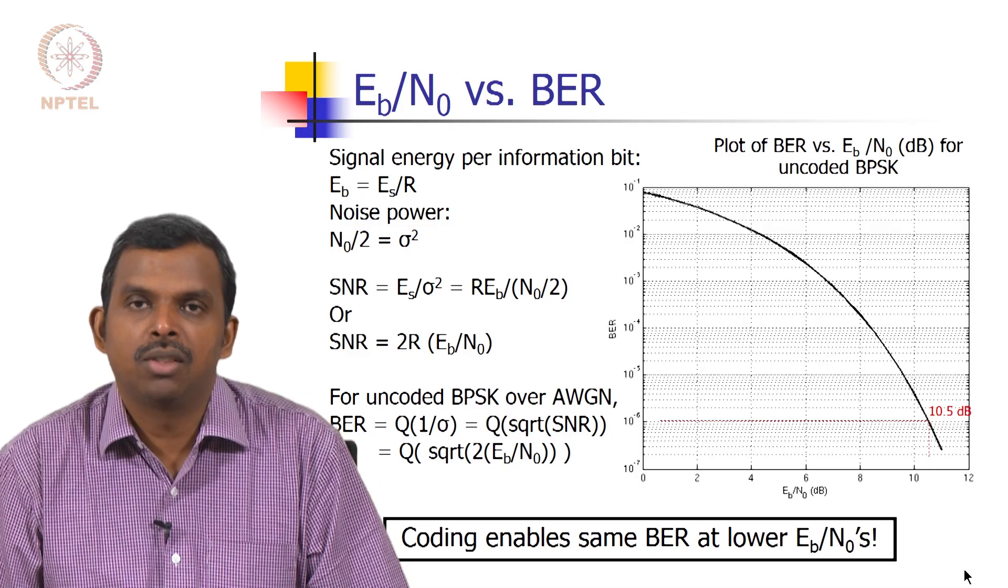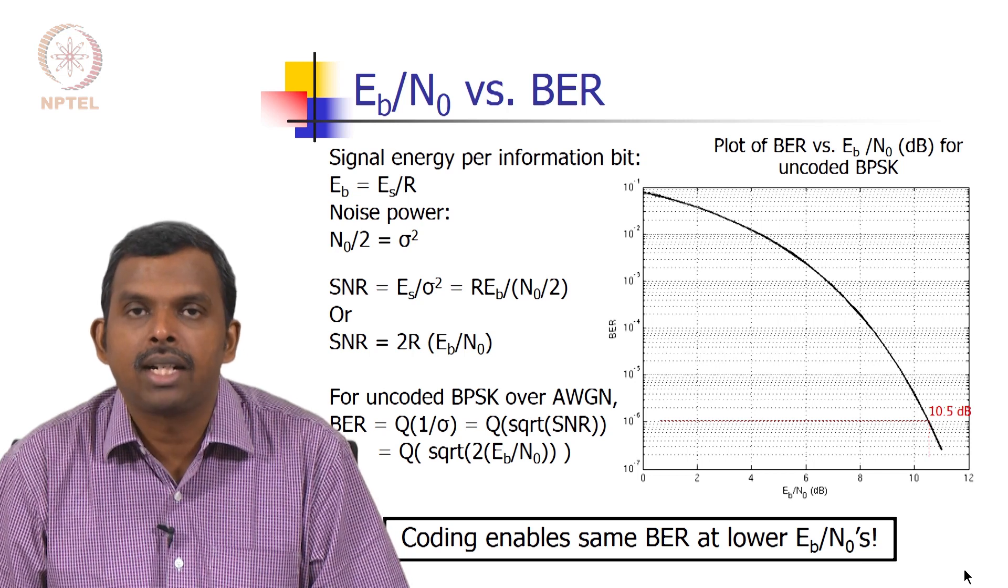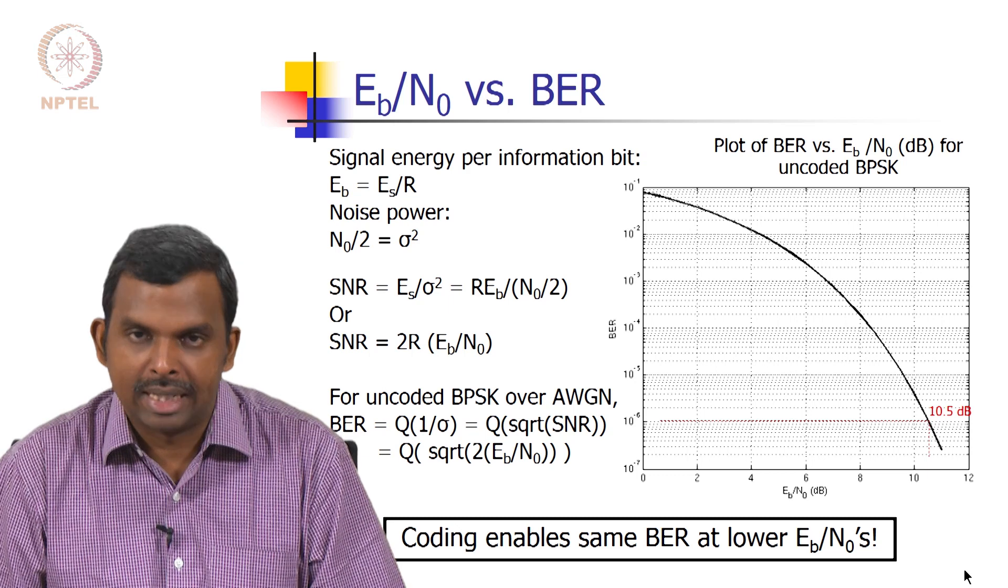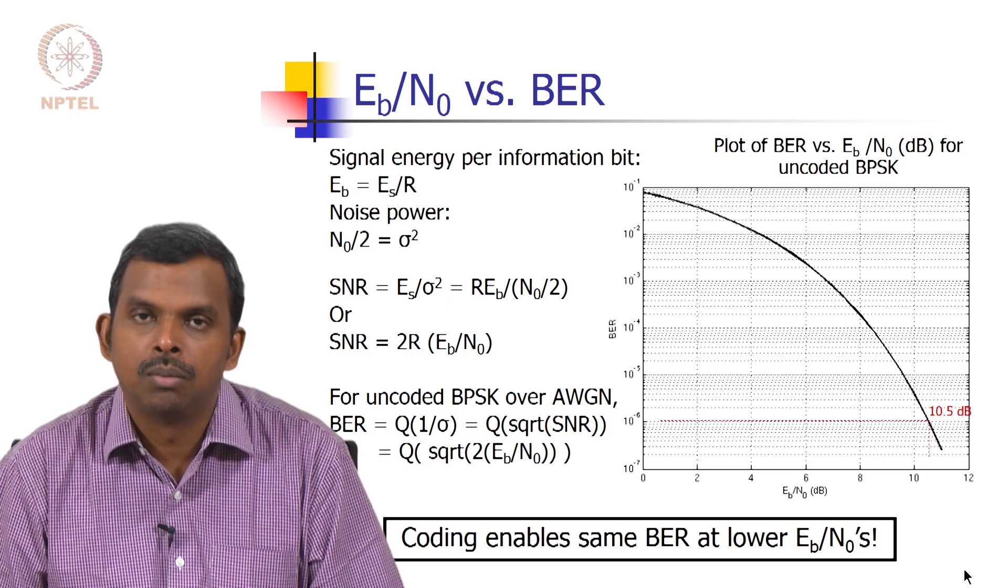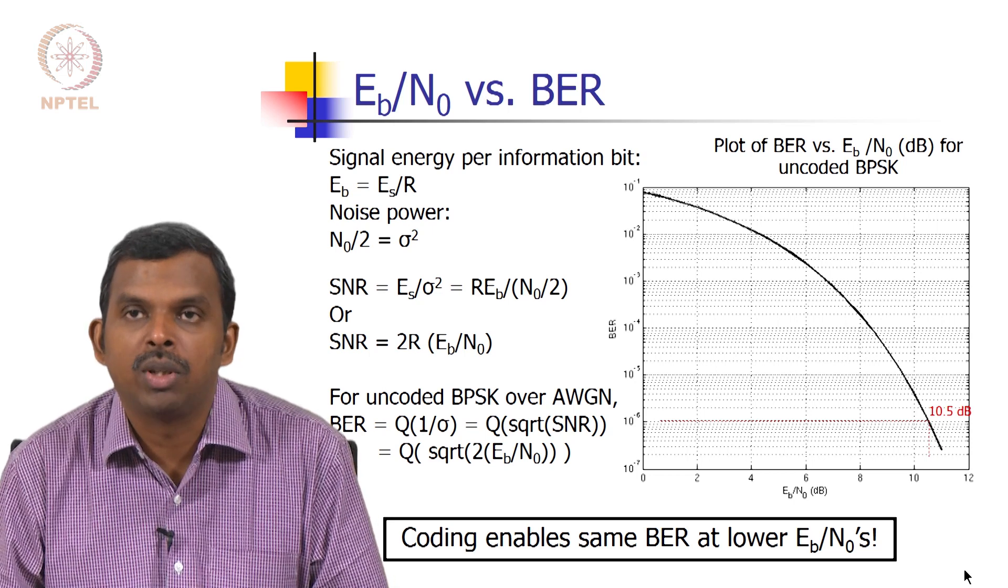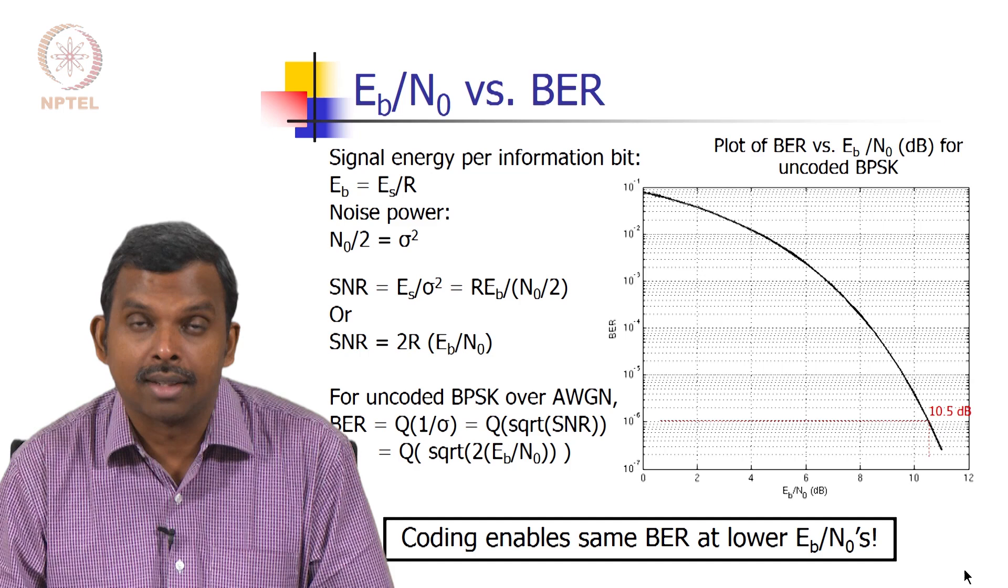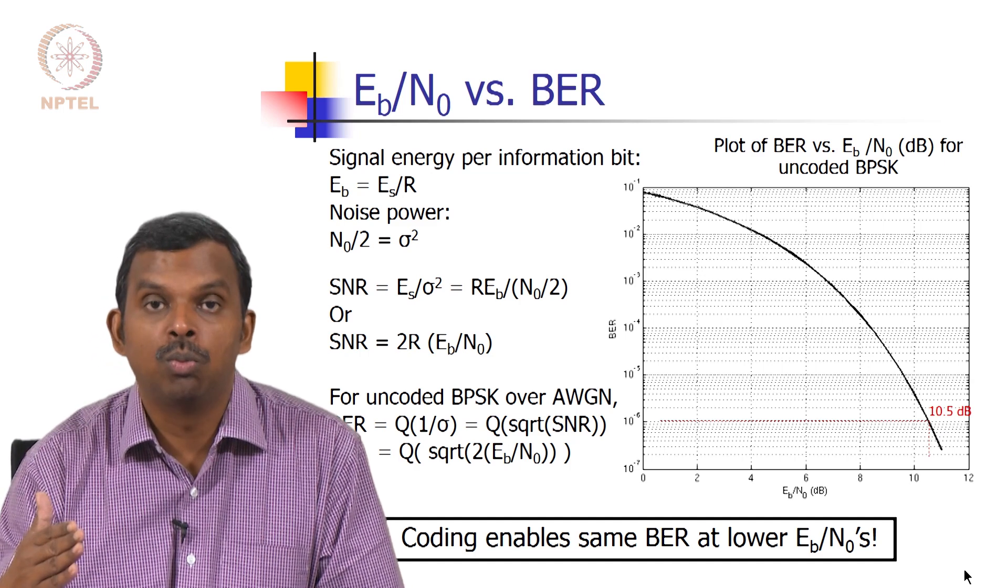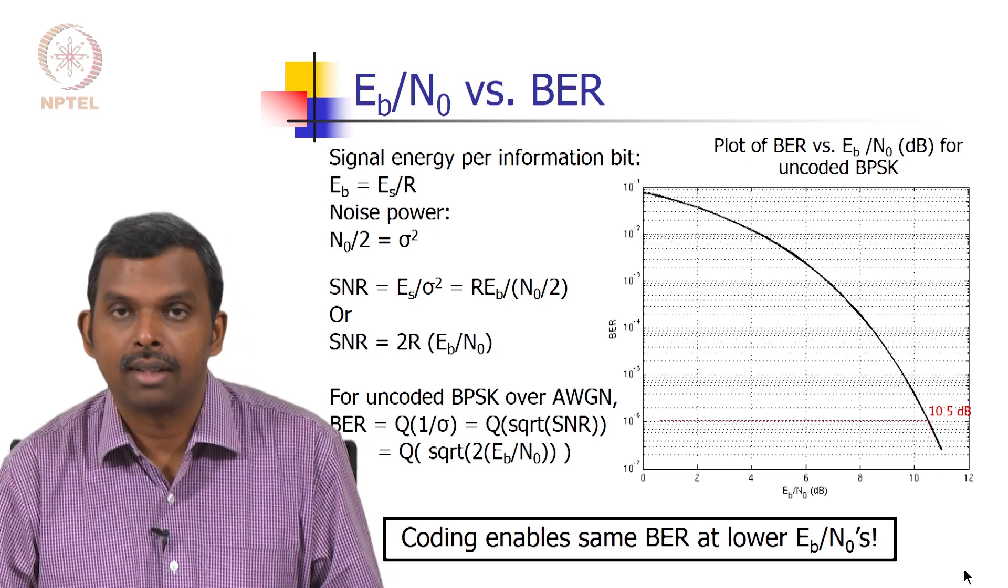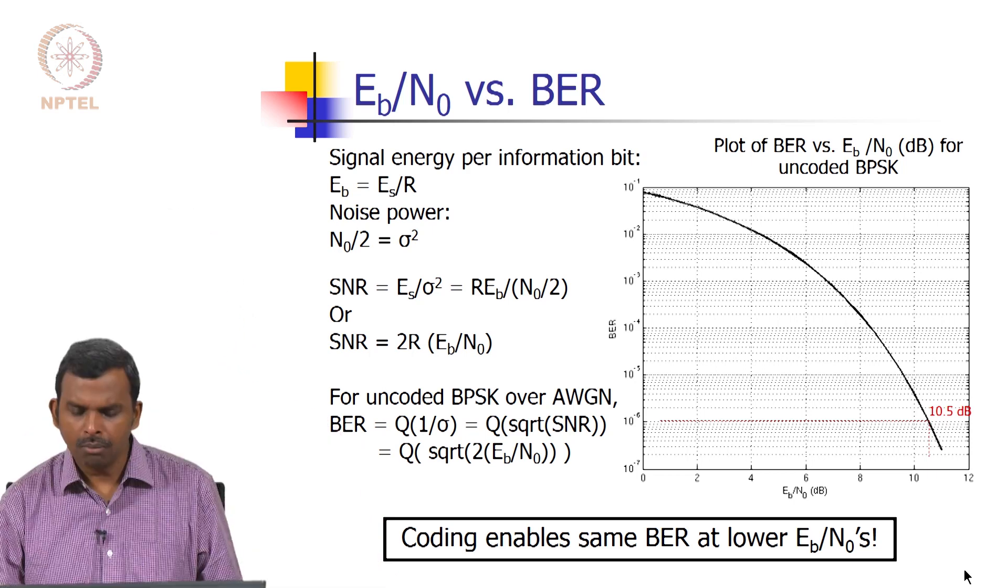Okay, so in the previous lecture we stopped at this plot, a plot of bit error rate versus Eb over N0 for uncoded BPSK. I was claiming this is the curve, for instance at 10.5 dB of Eb over N0, we have a bit error rate of 10^-6. Coding is going to help you move this curve to the left, maybe at a lower rate than 1, but it can do that.